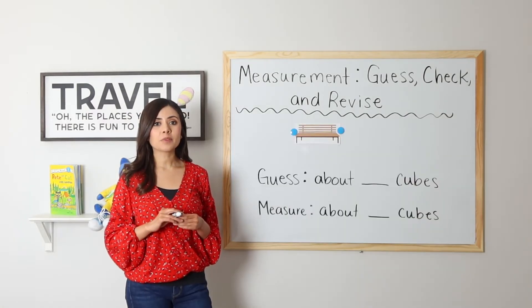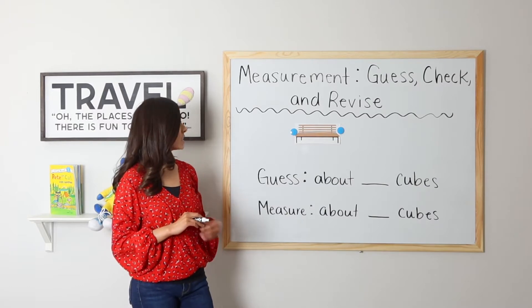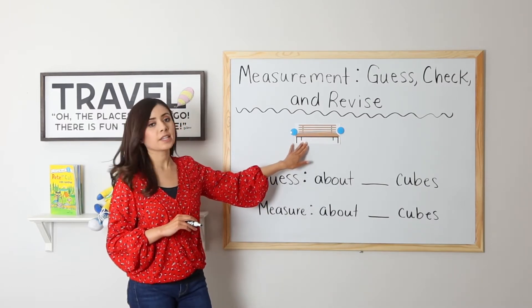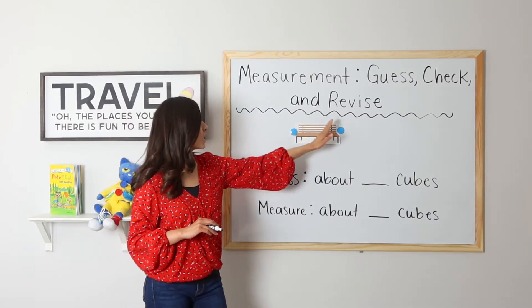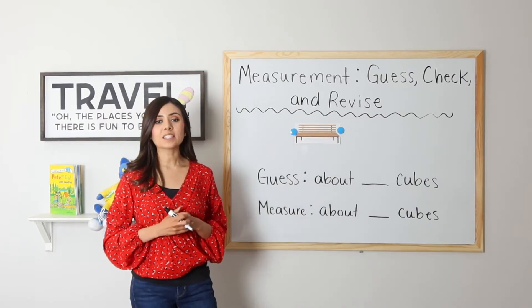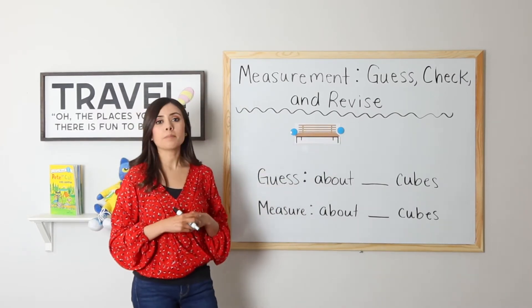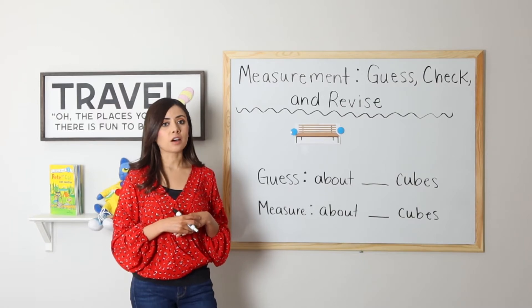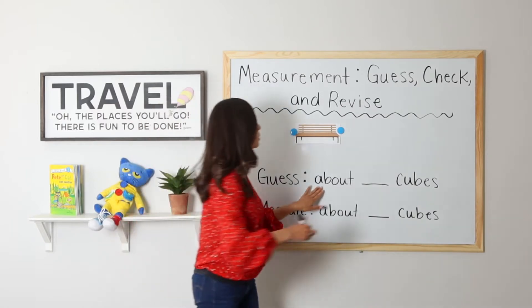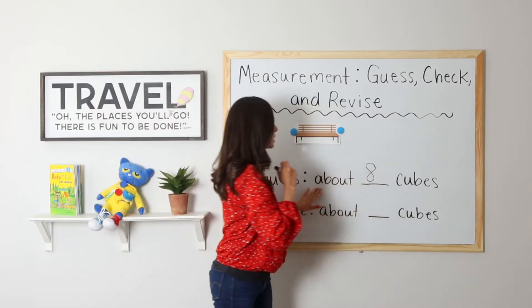All right, ready for this first example? So I want to guess the length of this bench. That is the measurement from end to end. So I guess that this bench is about eight cubes long.